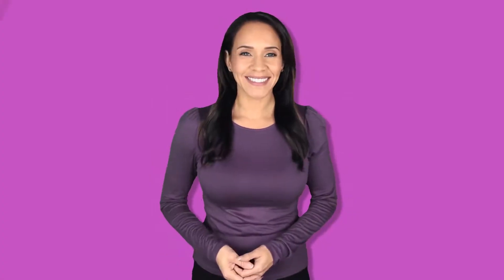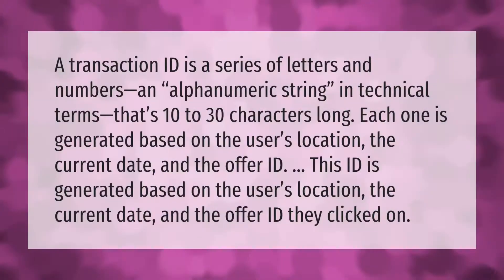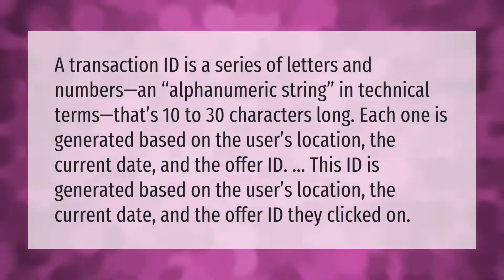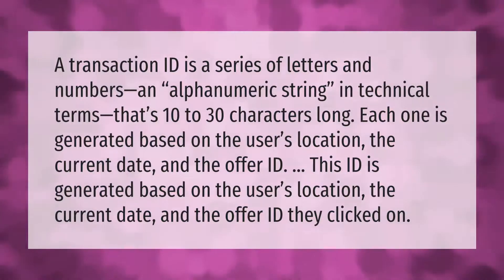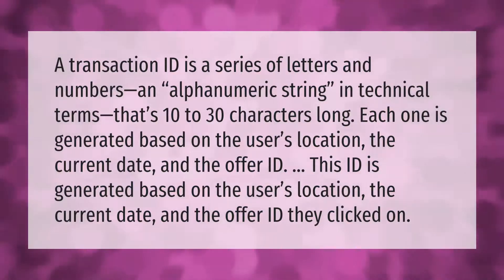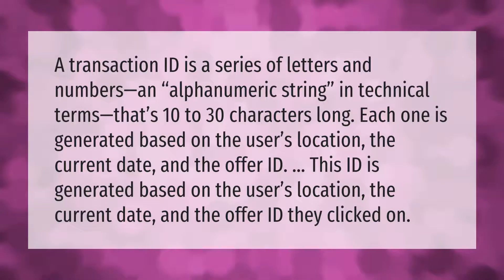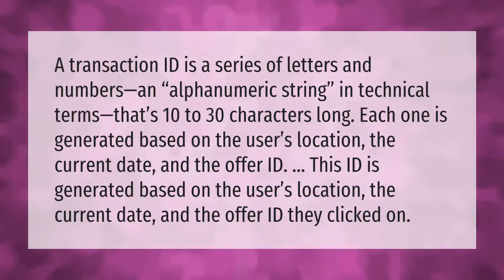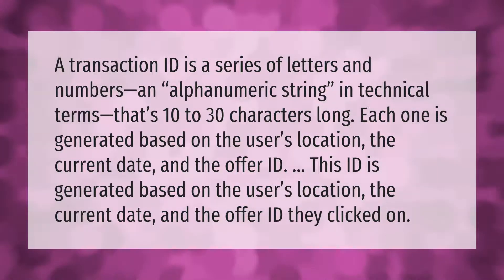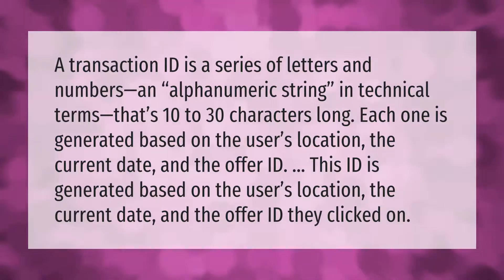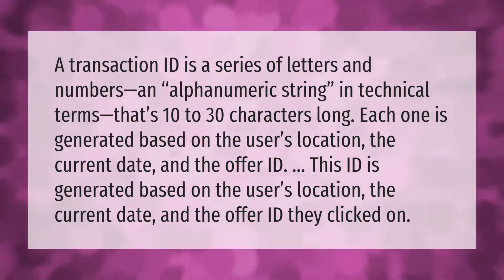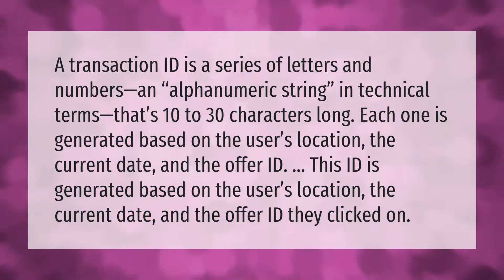A transaction ID is a series of letters and numbers — an alphanumeric string, in technical terms — that is 10 to 30 characters long. Each one is generated based on the user's location, the current date, and the offer ID they clicked on.